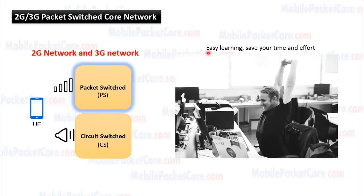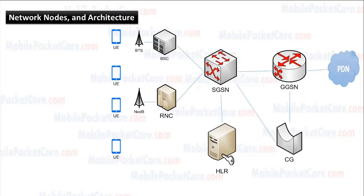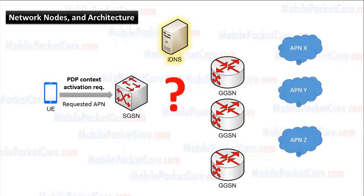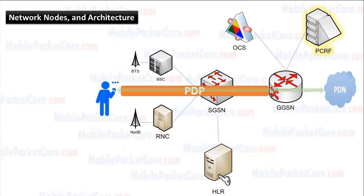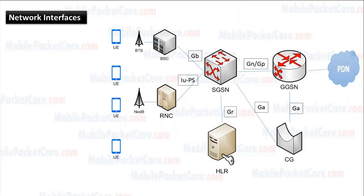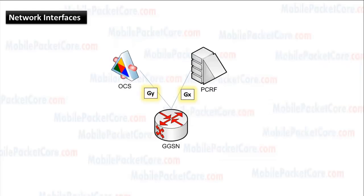In this course you will learn network nodes and architecture, including SGSN and GGSN, HLR, RNC and BSC, CG and DNS, DPI, OCS and PCRF. You will also learn network interfaces: Gn/Gp, Gb and IuPS, Gr and Ga, Gs, and Gx and Gy.